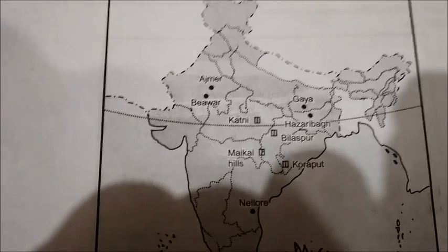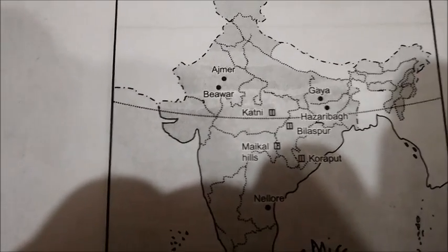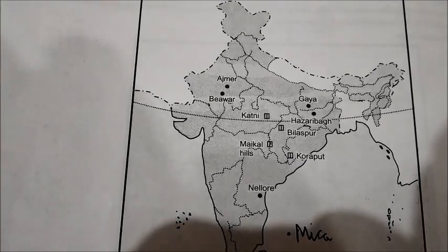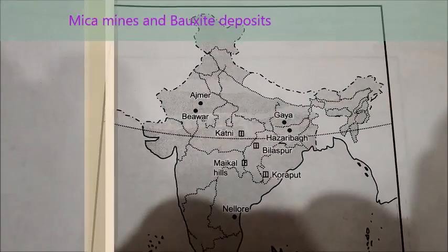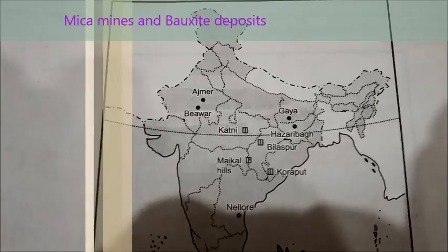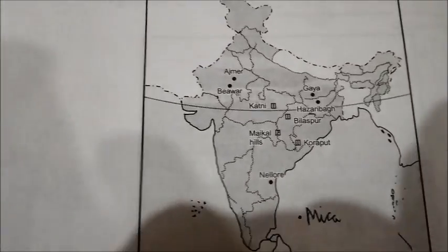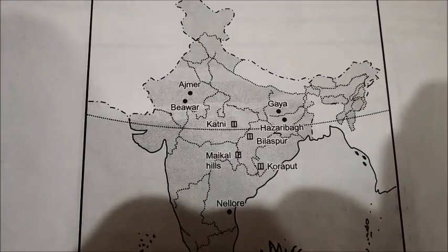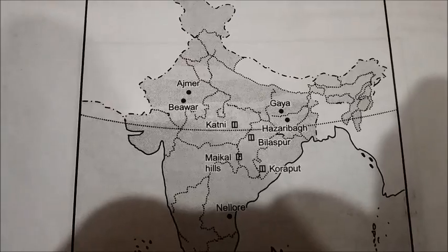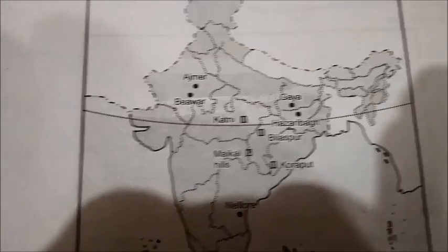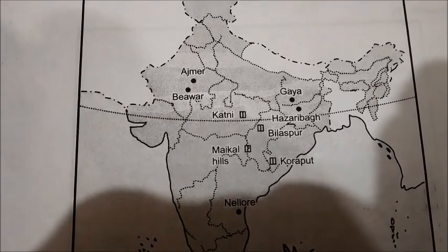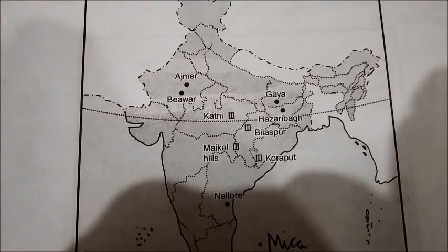Now look at the mica mines — these are extremely important. Ajmer and Bhilwara are located in Rajasthan. Gaya is in Bihar. Hazaribagh is in Jharkhand. Nellore is in Andhra Pradesh. For bauxite deposits, you can have a cursory look — Katni in Madhya Pradesh, Maikal Hills between Chhattisgarh and Maharashtra, and Bilaspur and Koraput.